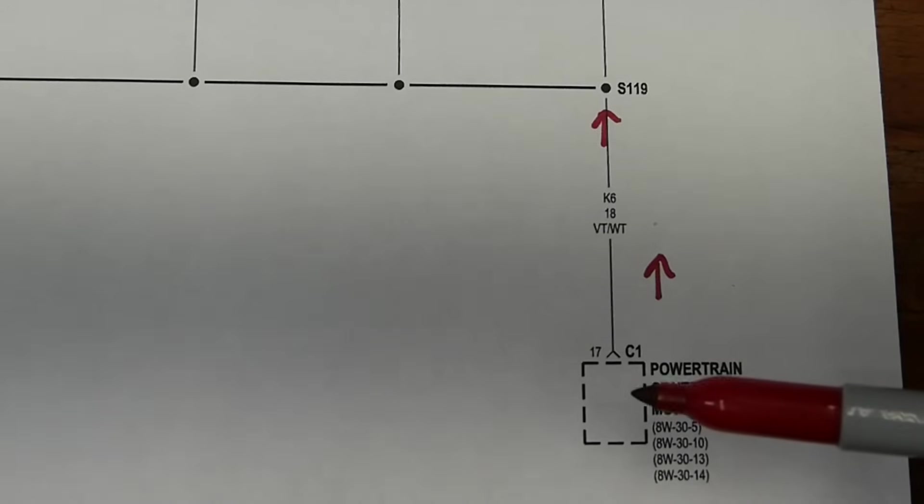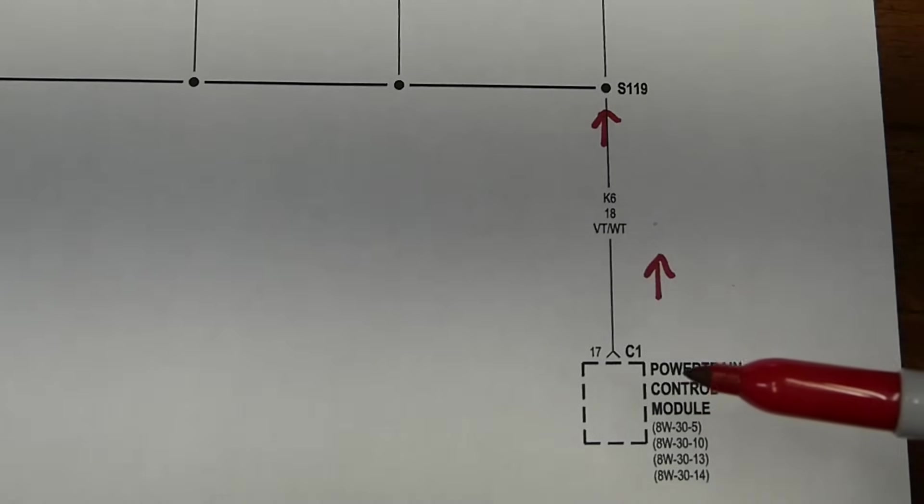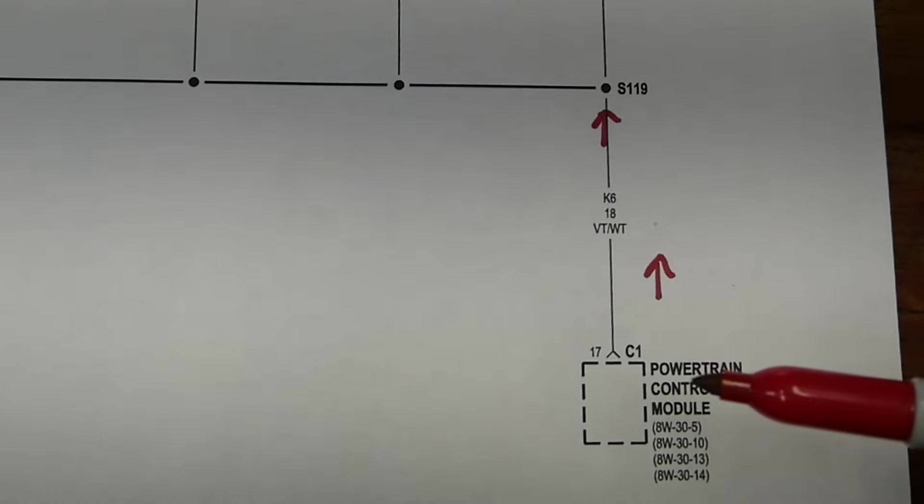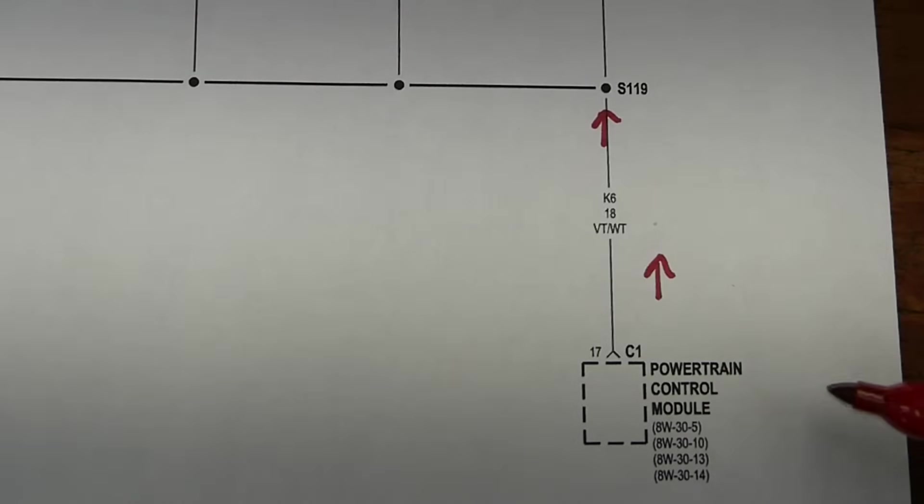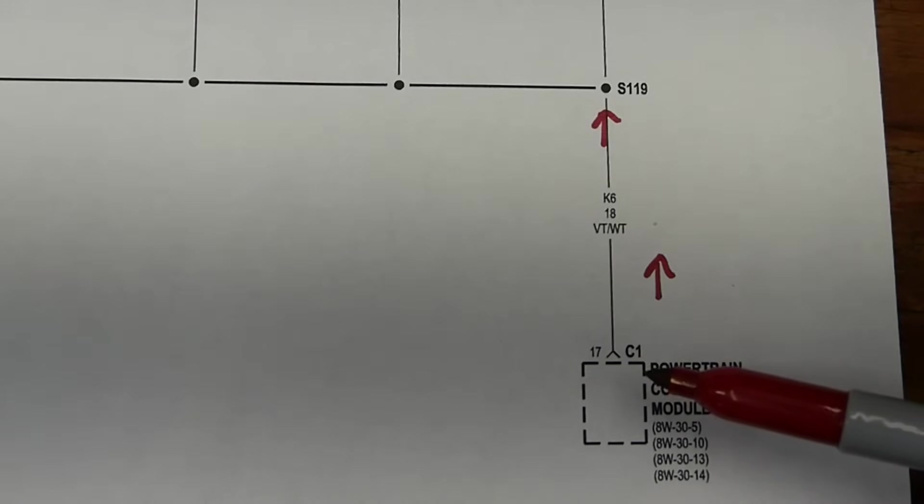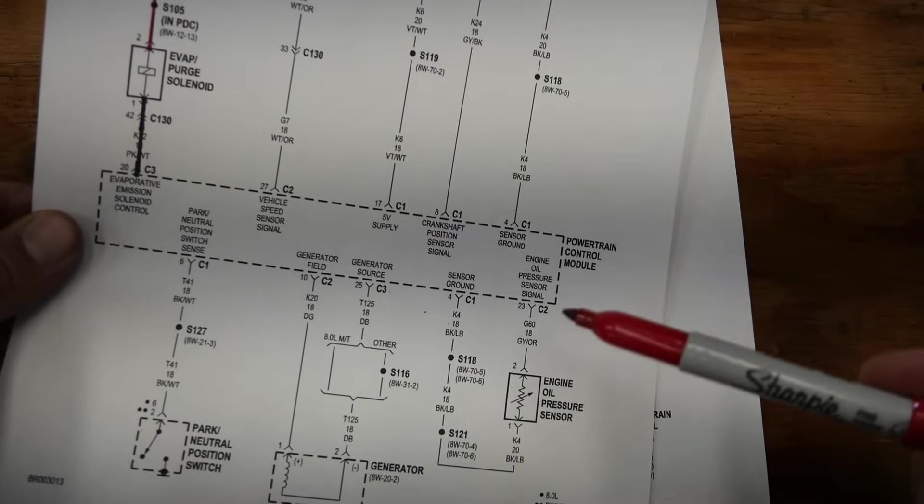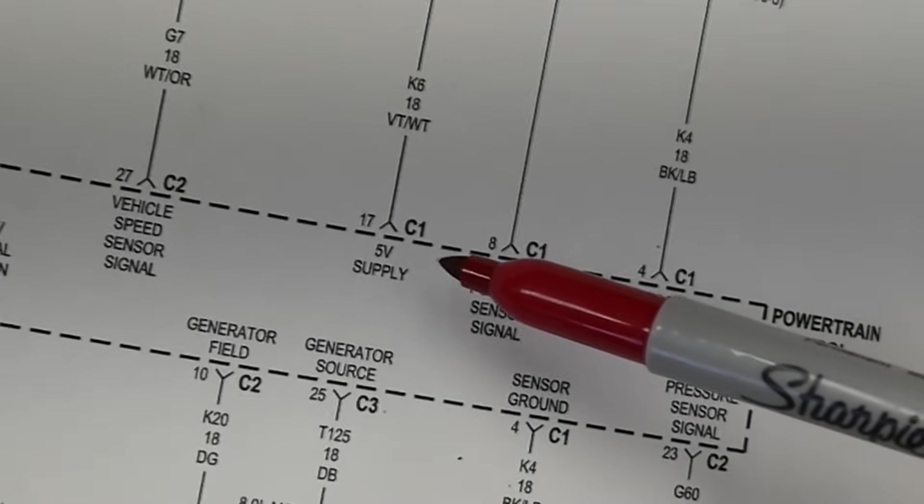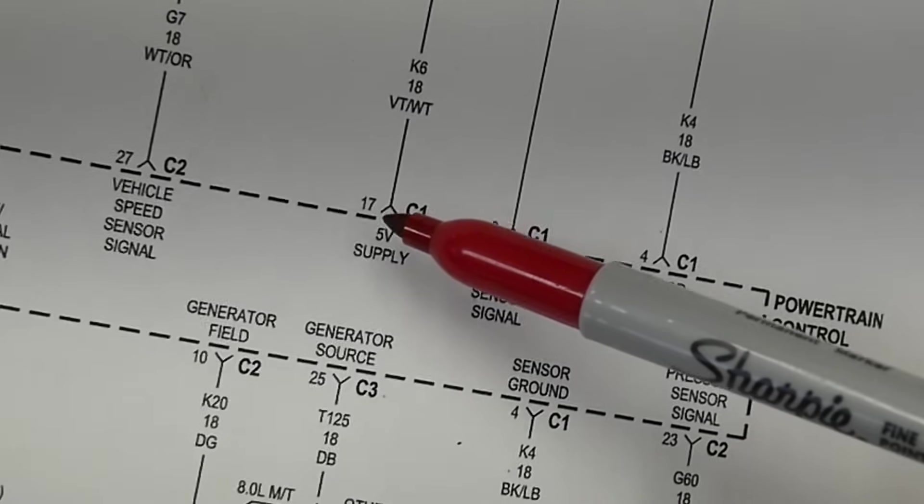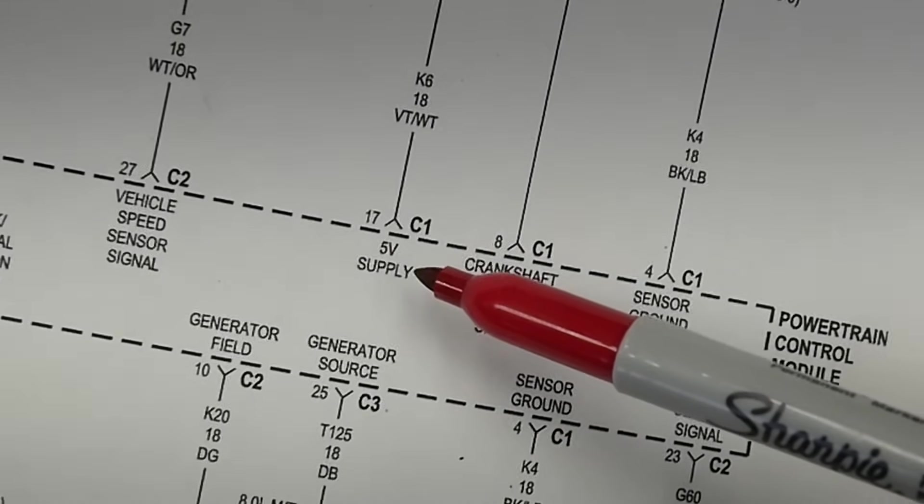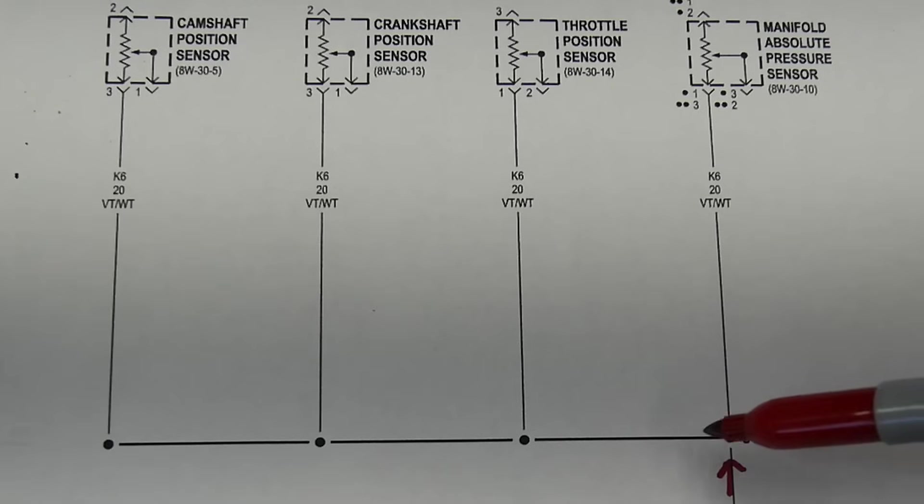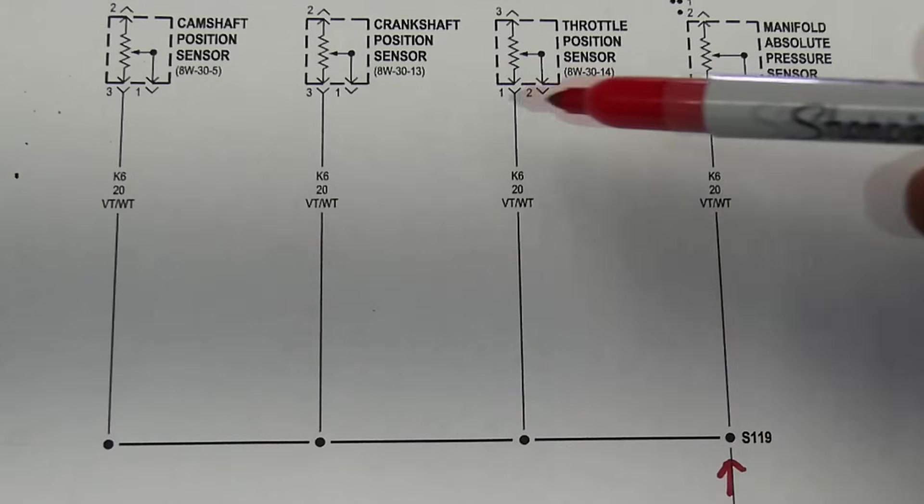So here's a quick version or a shorter version of the graph on the previous page that I showed you. Here's our power control module, there's the connector, pin number 17, which if you go back to the previous page, here it is. Connector C1, pin number 17, 5 volt power supply. It comes up here and splices off to four different sensors.